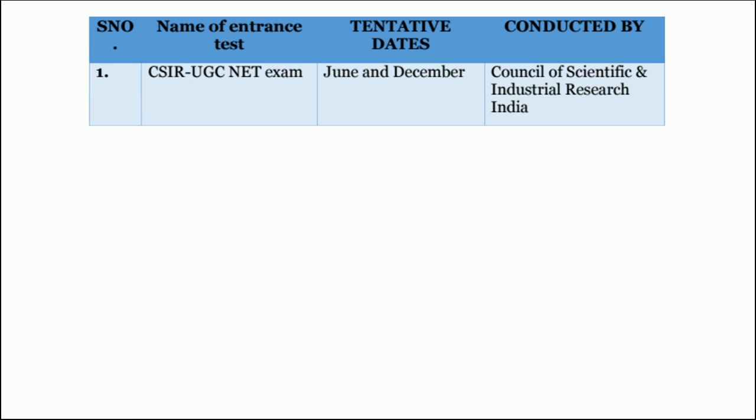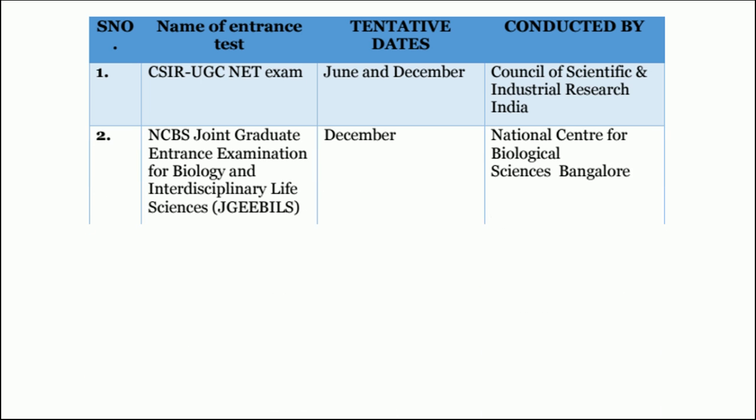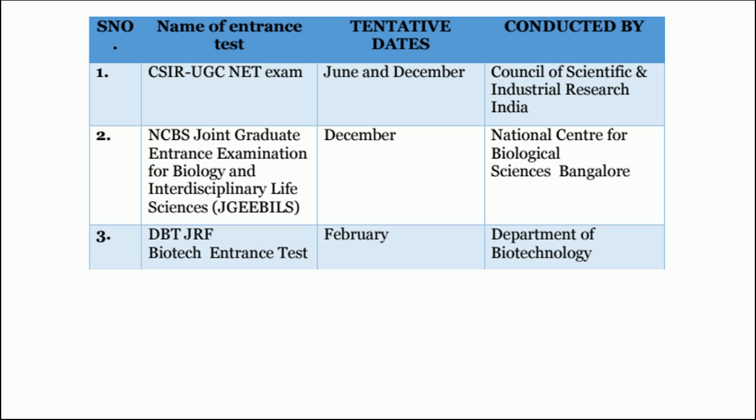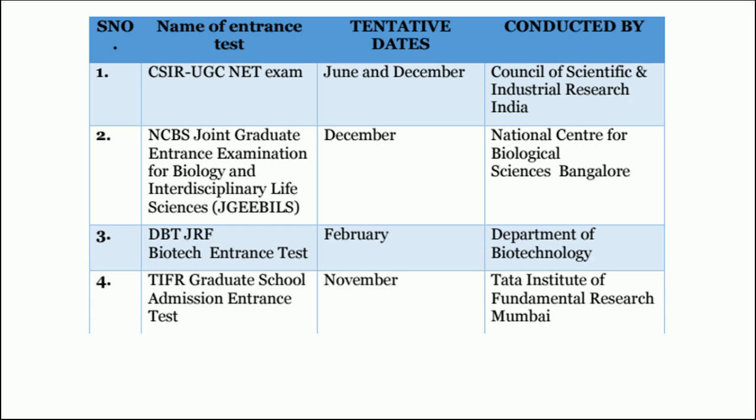The first one is CSIR UGC NET exam conducted twice, June and December. NCBS joint graduate entrance examination for biology and interdisciplinary life sciences, known as JGEEBILS, tentative date is in month December, conducted by National Center for Biological Sciences Bangalore. DBT JRF, which is a biotech entrance test, conducted about February by Department of Biotechnology India.